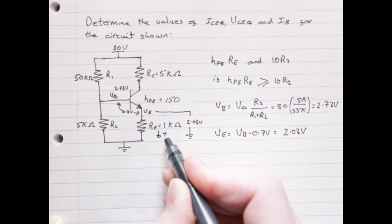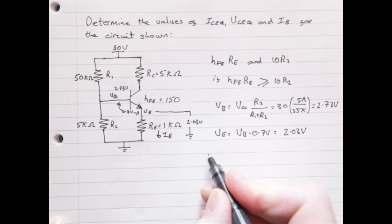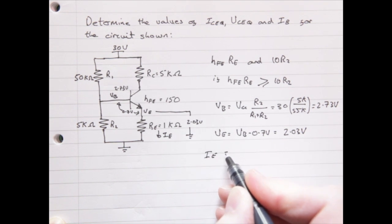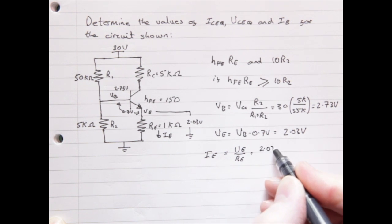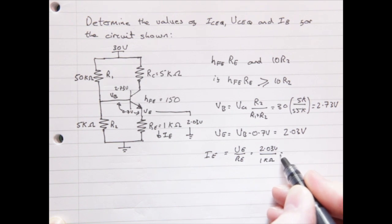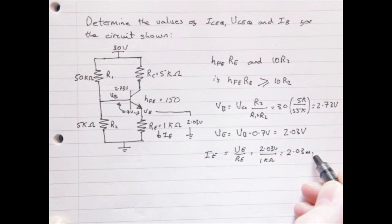Next, we calculate the emitter current. Well, we know the value of RE at 1k and we know the voltage across the resistor at 2.03 volts. Therefore, we can use Ohm's law to calculate the emitter current. This gives us a value of 2.03 milliamps.